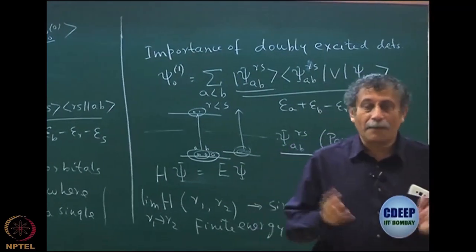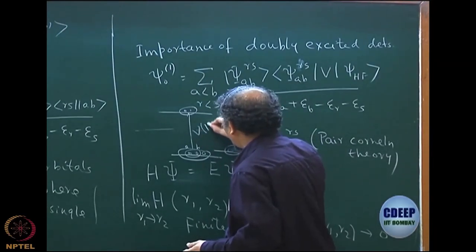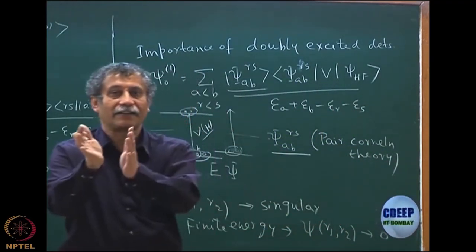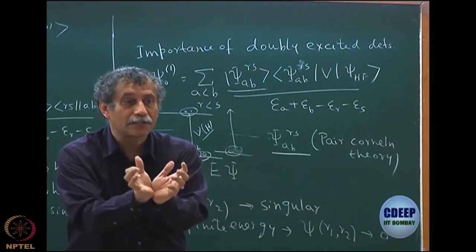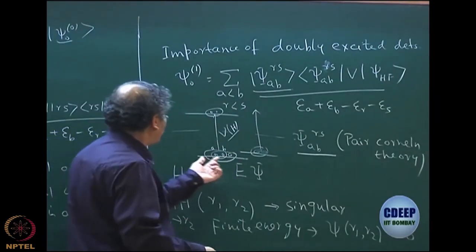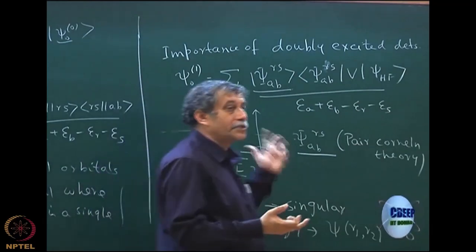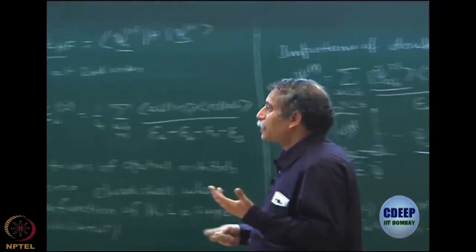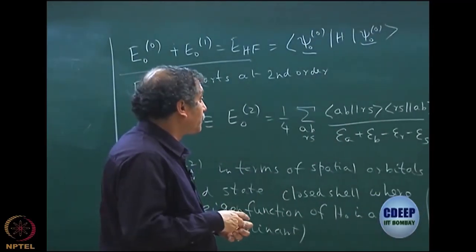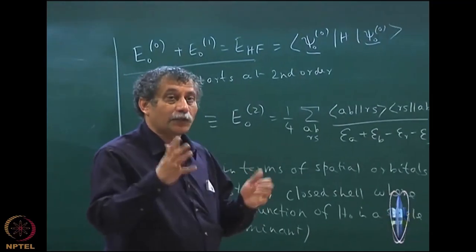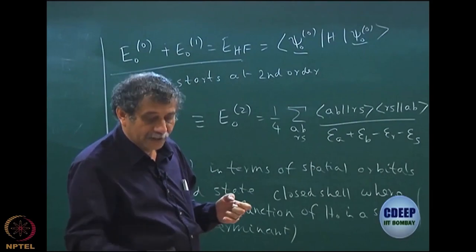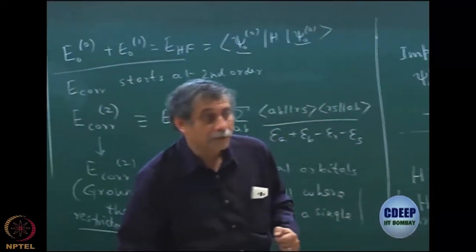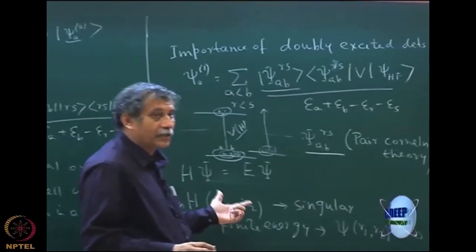Sinanoglu argued that three particles cannot come close together anyway because they cannot be in the same orbital even in Hartree-Fock due to the Pauli principle. That is number one. Number two: the Hamiltonian which makes them correlate has only a maximum of two-particle interactions — one-particle and two-particle interaction due to Coulomb. So it is very hard for that Hamiltonian to correlate three particles together. Therefore the entire correlation is dominated by what Sinanoglu called pair correlation theory.